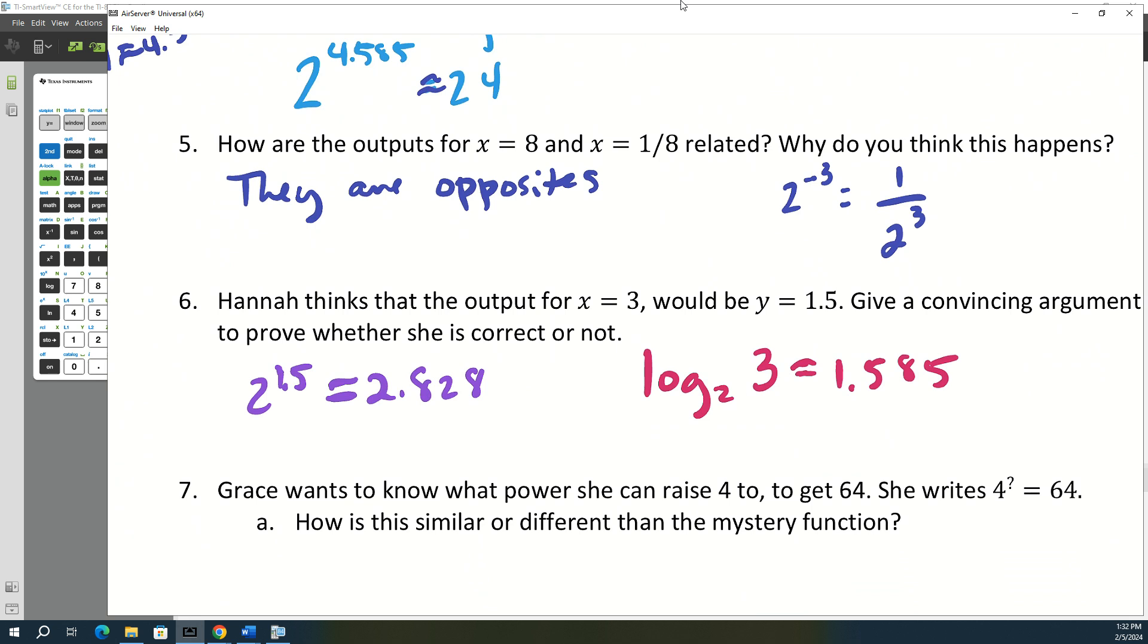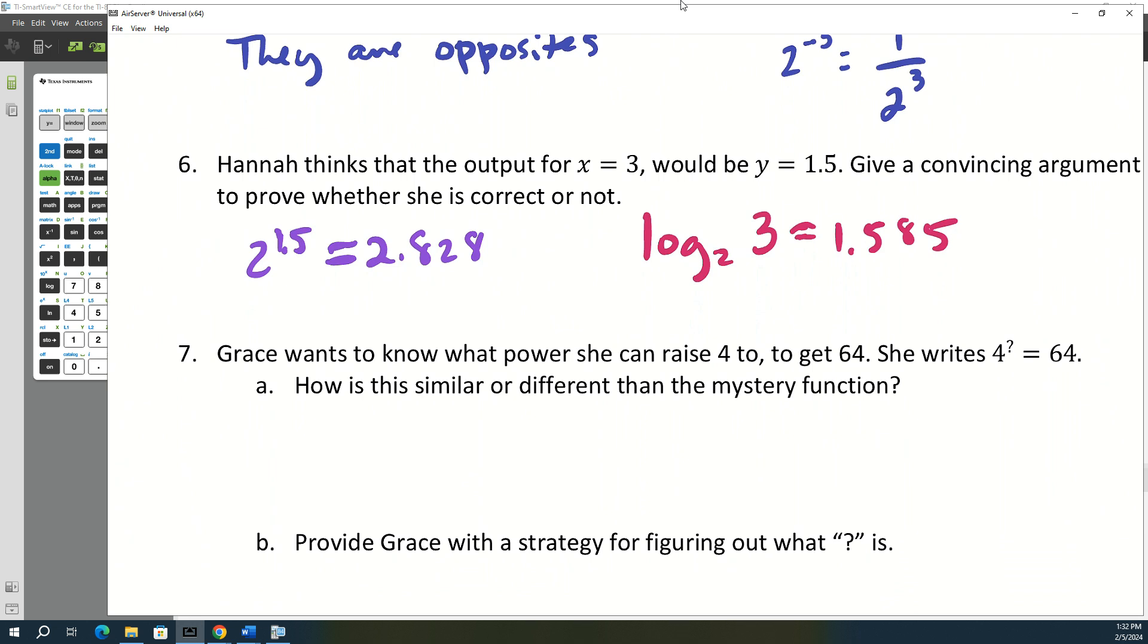All right. Now Grace wants to know what power she can raise 4 to to get 64. So she writes 4 to what power gives you 64. How is this similar and different from the mystery function? So how is it similar? All right, you're still finding a power, or still finding an exponent.